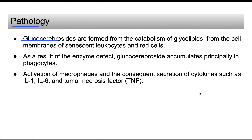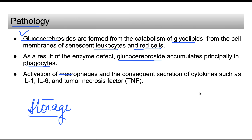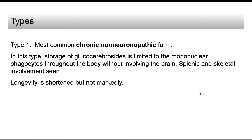Glucocerebrosides are formed from the catabolism of glycolipids of the cell membranes of WBCs and red cells. From red cells and leukocyte cell membranes, glucocerebrosides are produced and broken down by glucocerebrosidase, which is defective in Gaucher's disease. Therefore, glucocerebrosides accumulate in phagocytes and macrophages in various organs such as the liver and bone marrow. These activated macrophages also secrete cytokines such as IL-1, IL-6, and TNF, causing further damage.